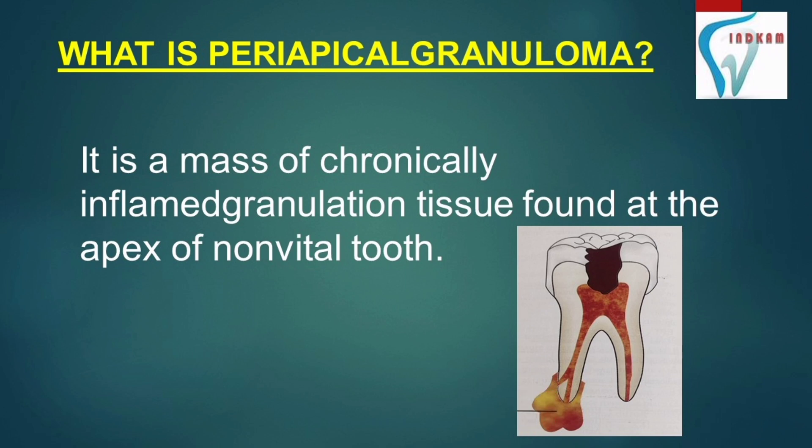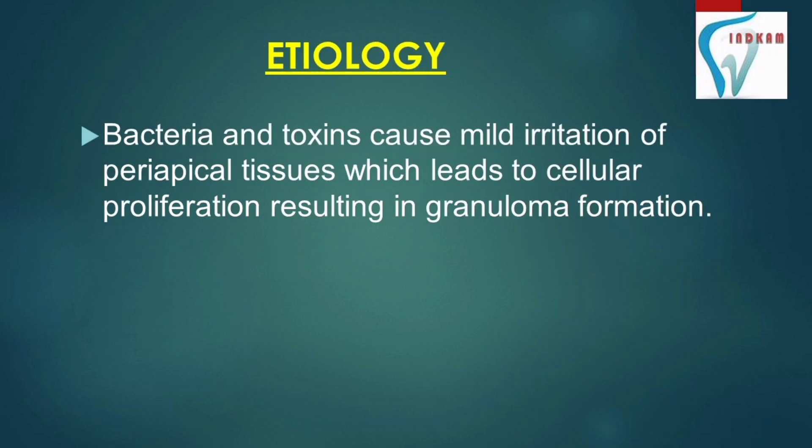Etiology: bacteria and toxins cause mild irritation of periapical tissues, which leads to cellular proliferation, resulting in granuloma formation.